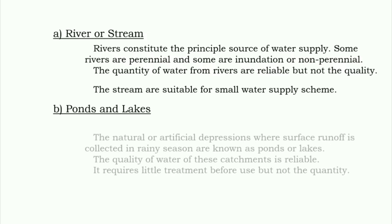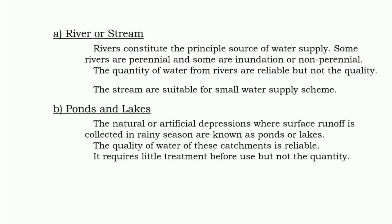Second is ponds and lakes. The natural or artificial depressions where surface runoff is collected in the rainy season are known as ponds or lakes. The quality of water from these catchments is reliable, but not the quantity. It requires little treatment before use.